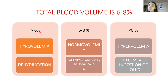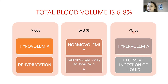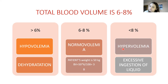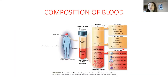If blood volume is less than 6 percent, we call this condition hypovolemia, which mainly happens during dehydration. When blood volume is more than 8 percent, this condition is called hypervolemia, which mainly occurs in cases of excessive fluid injections.